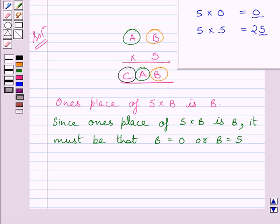Now we can write, since one's place of 5 multiplied by B is B, it must be that B is equal to 0 or B is equal to 5. Now note that unit's place of 5 multiplied by A is A itself. So, we can write, one's place of 5 multiplied by A is A. Again, this is possible only if value of A is equal to 0 or value of A is equal to 5.